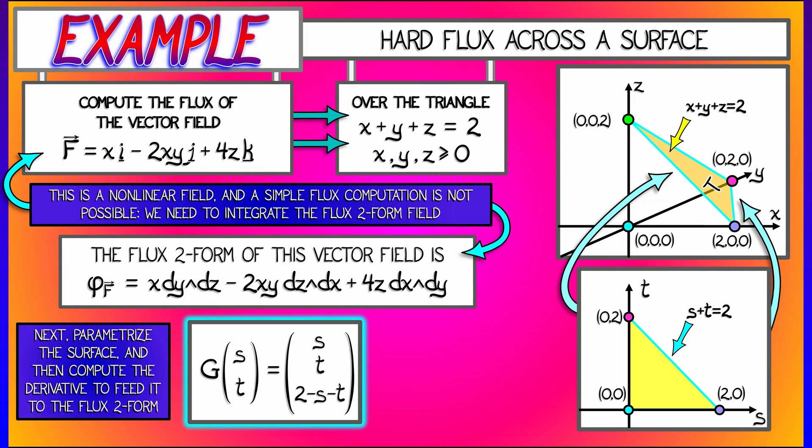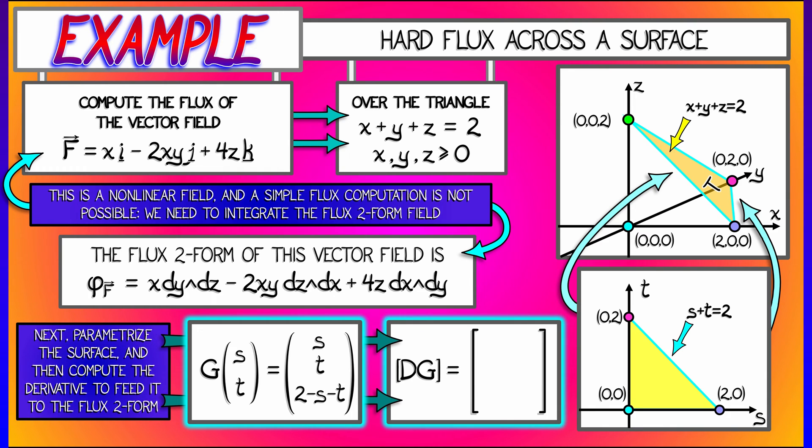Okay, next we take the derivative of this parametrization. Dg is simple. It's constant. It has columns (1, 0, -1) and (0, 1, -1). This is constant because we have this really simple flat surface with a constant unit normal parallel to (1, 1, 1).